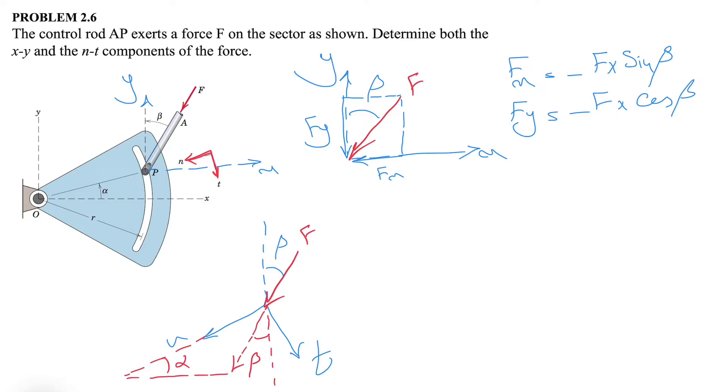This will be also beta, and we have another information in here that n would make alpha with the horizontal or x axis. What we need to do for force F is we need to find first one of these missing angles, either this one or this one.